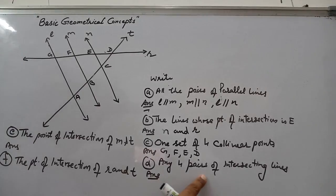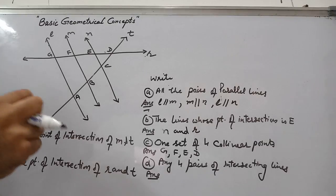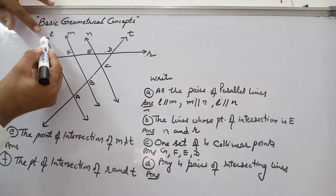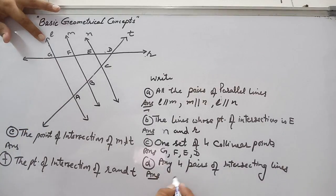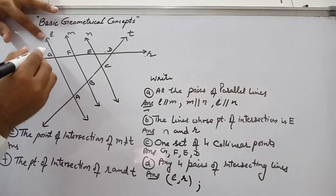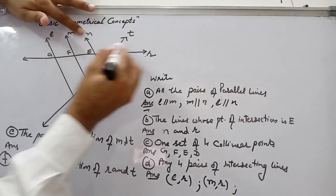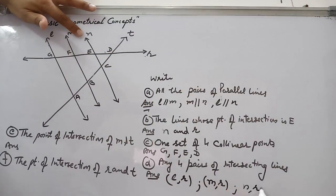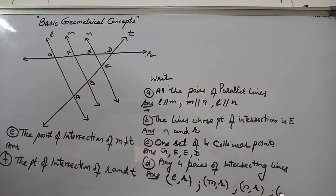Next: find any four pairs of intersecting lines. Line L and line R are intersecting at G. Second pair: M and R are also intersecting. Third: N and R are intersecting at E. Fourth: R and T are also intersecting at D. So the four pairs are L and R, M and R, N and R, and R and T.